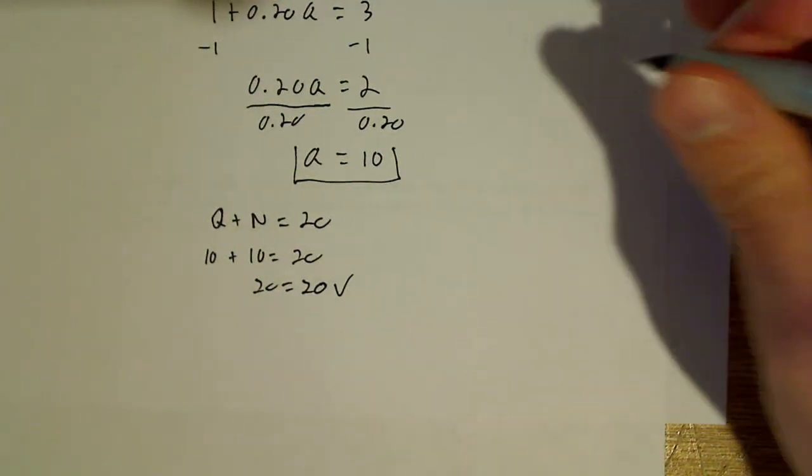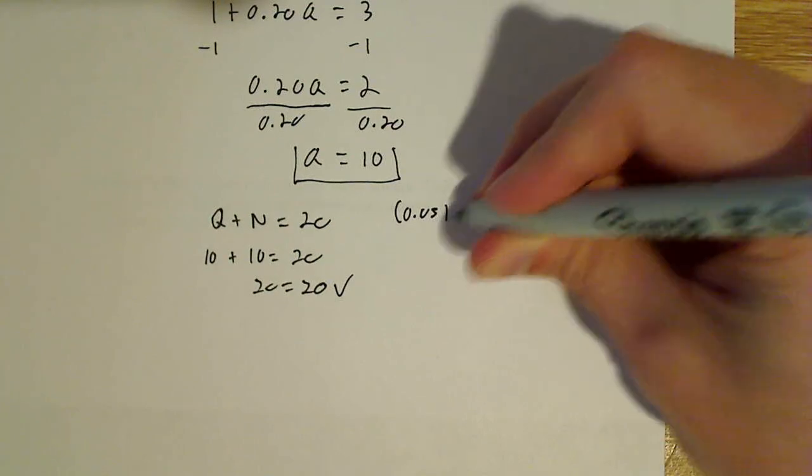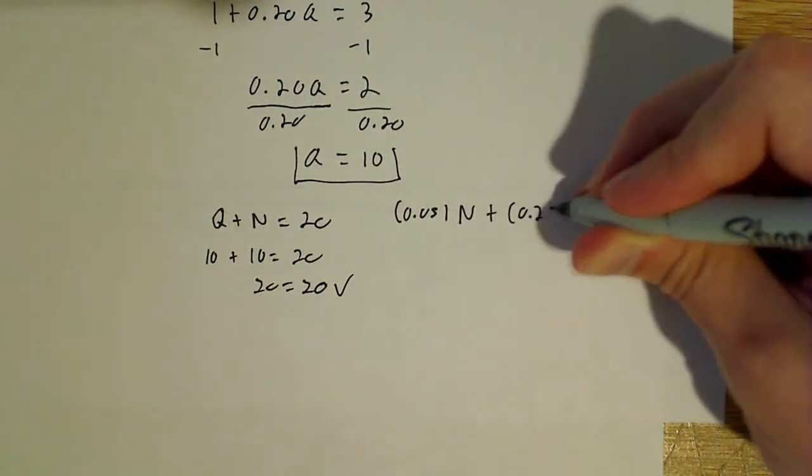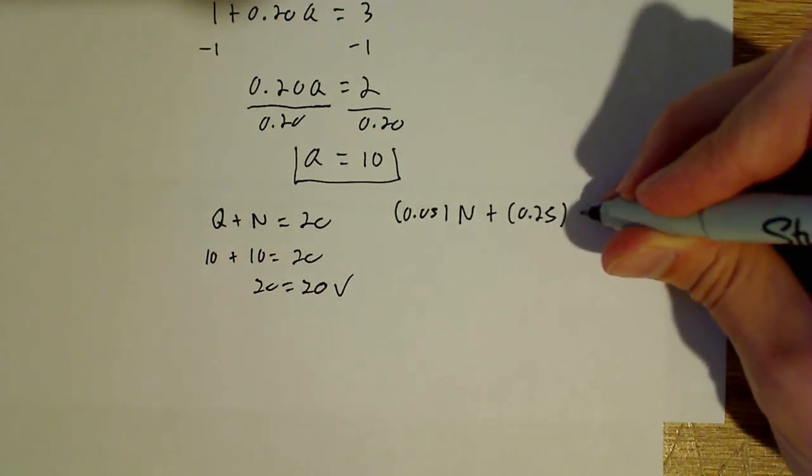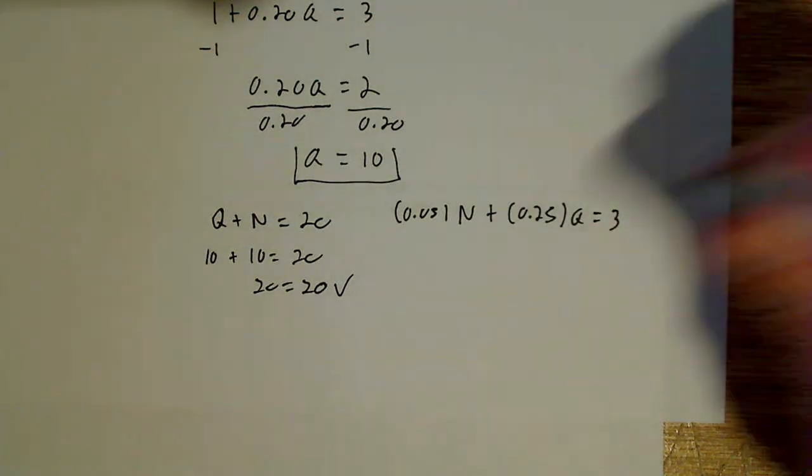Now the next one we can do the same thing here. So 0.05 and that's n plus 0.25 and that is q is equal to 3. So plugging in for n and q,